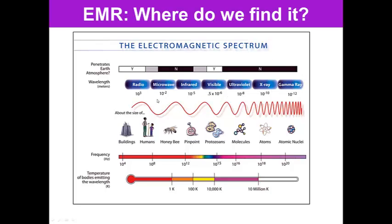The size of these things differ. Radio waves are about the size of buildings to human beings, then microwaves are smaller, infrared are even smaller still, until we get to gamma rays and x-rays, which are as small as atomic nuclei.